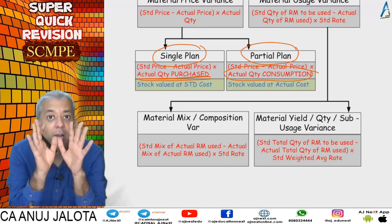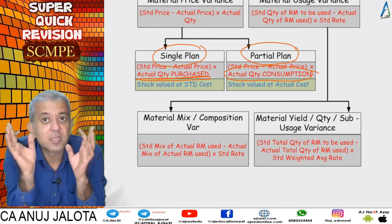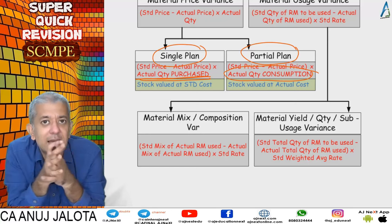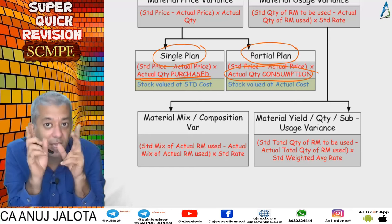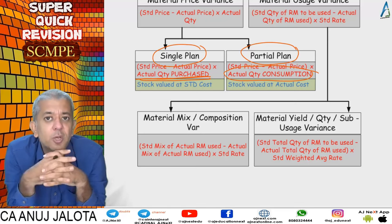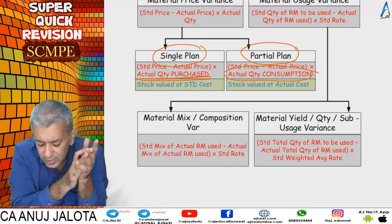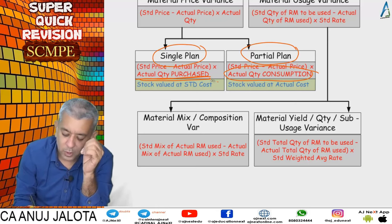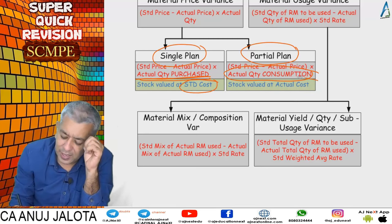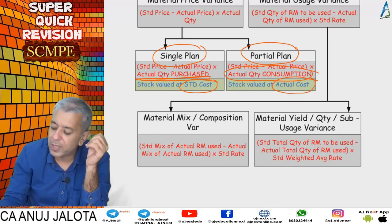Under single plan, raw materials are valued at standard cost; under partial plan, they are valued at actual cost. This distinction only matters when there are raw material stocks in the question — if there are no stocks, purchases and consumption will always be the same.